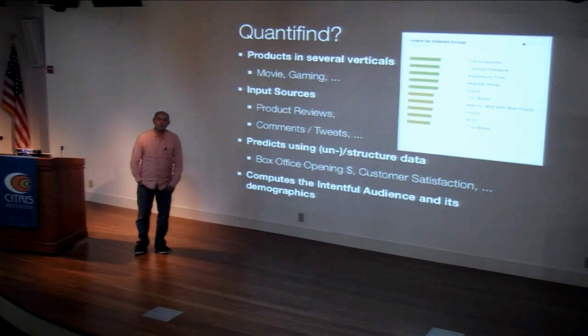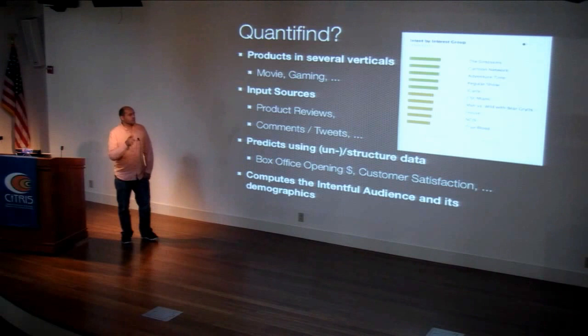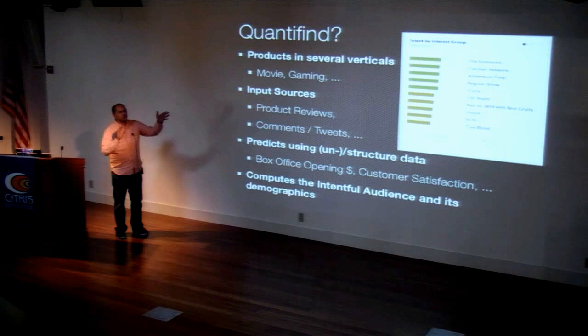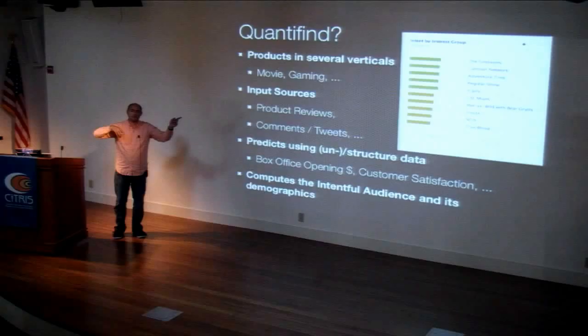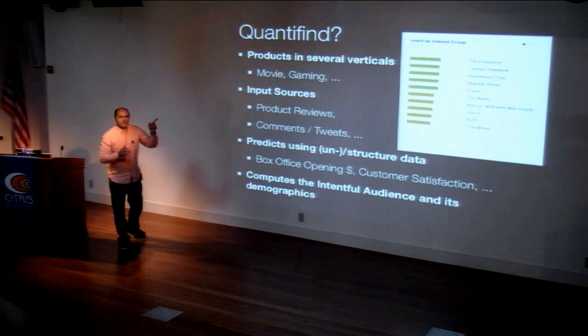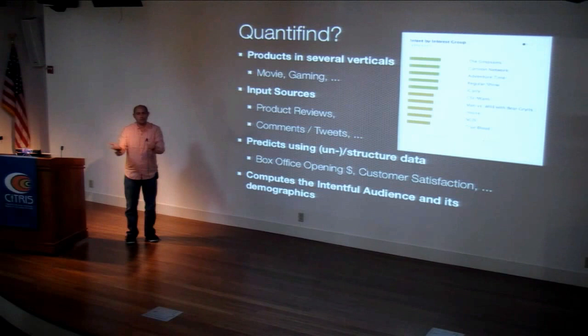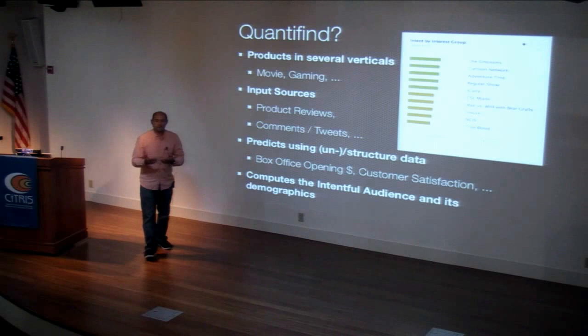How does it change over time — whether it's intent by interest group or demographics of the intentful audience? We have several views on the data. This one is pretty static — it accumulates data over the entire year, so from today to tomorrow there probably won't be any change. We also have other views that allow them to see: 'I put out this message — how did it actually impact the audience demographics or the drivers?' We also compute drivers — what gets people into the movie theater.